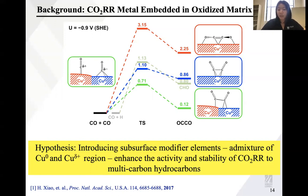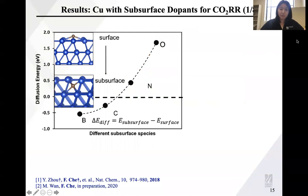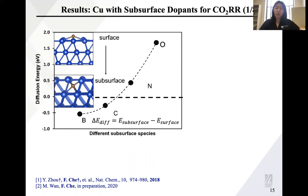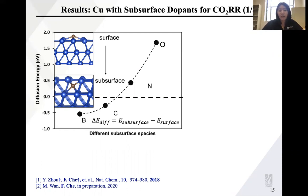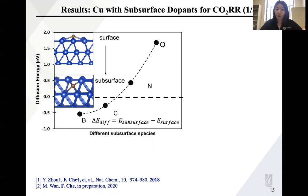Such a subsurface element would be stable inside the copper catalyst. Moving to the results section: we first examined different electronegative elements such as boron, carbon, nitrogen, and oxygen to see which elements prefer to stay at the subsurface, since the subsurface is harder to reduce under the electroreduction environment. We found that boron and carbon are more stable at the subsurface compared to nitrogen or oxygen, and we hypothesize they can more stably modify the copper catalyst.